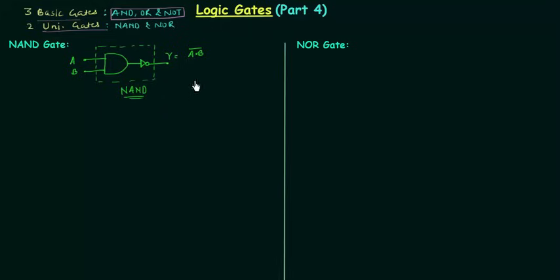And the output, if we simplify by using De Morgan's law, is equal to A complement OR B complement.